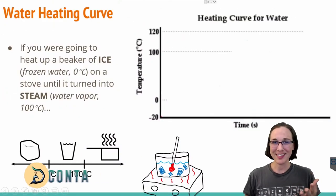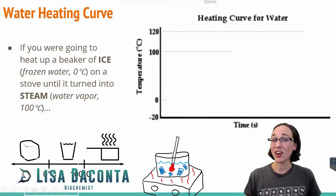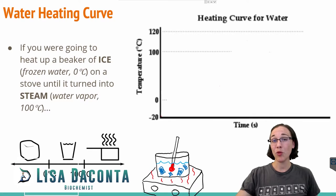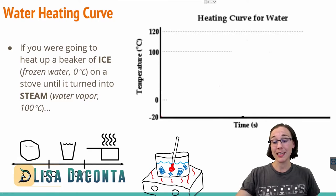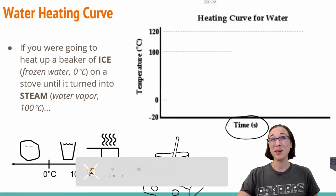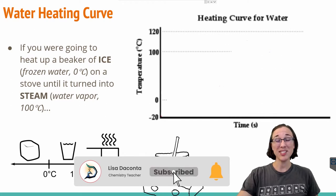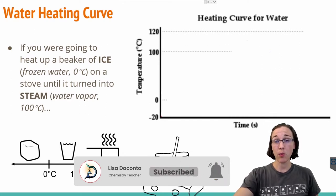If we were to hypothetically have a glass of ice and set that glass of ice on a hot plate and warm it up consistently over time, what would our graph end up looking like if temperature is plotted on the y-axis? Let's go over what we know about water.